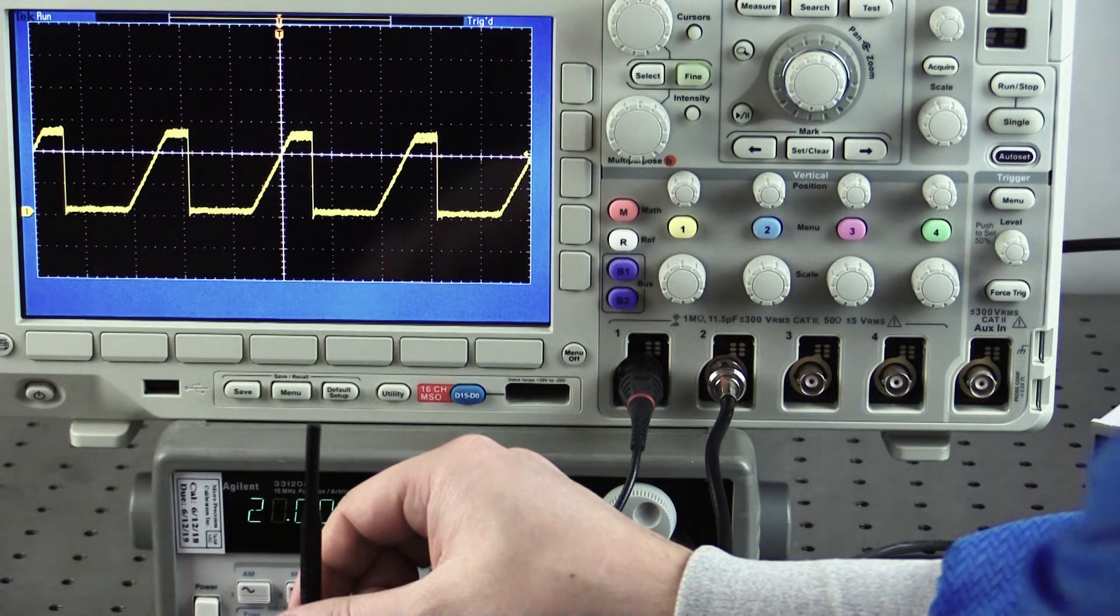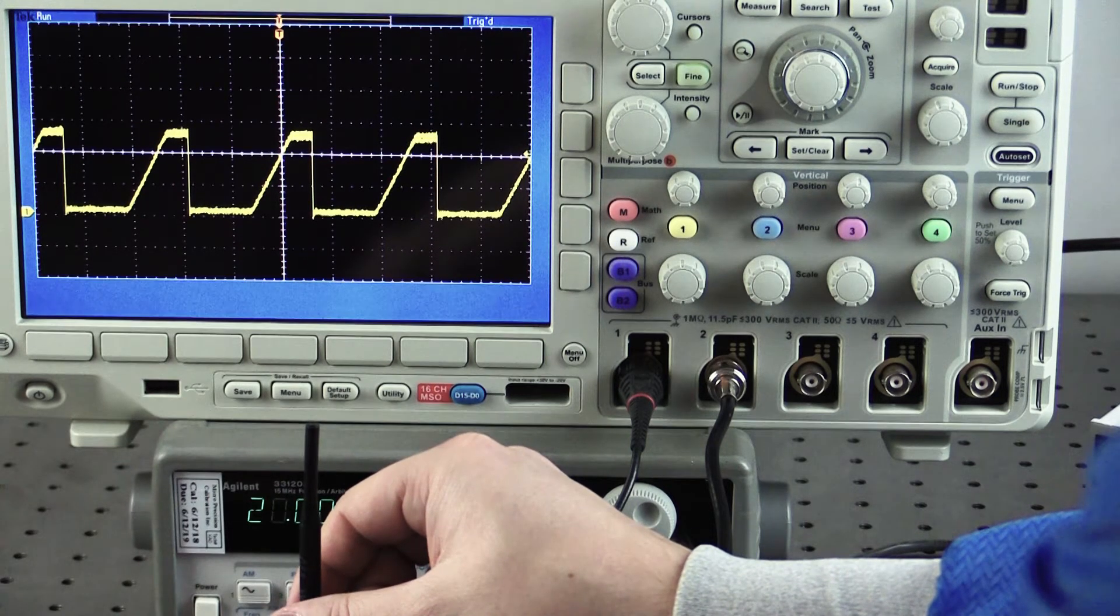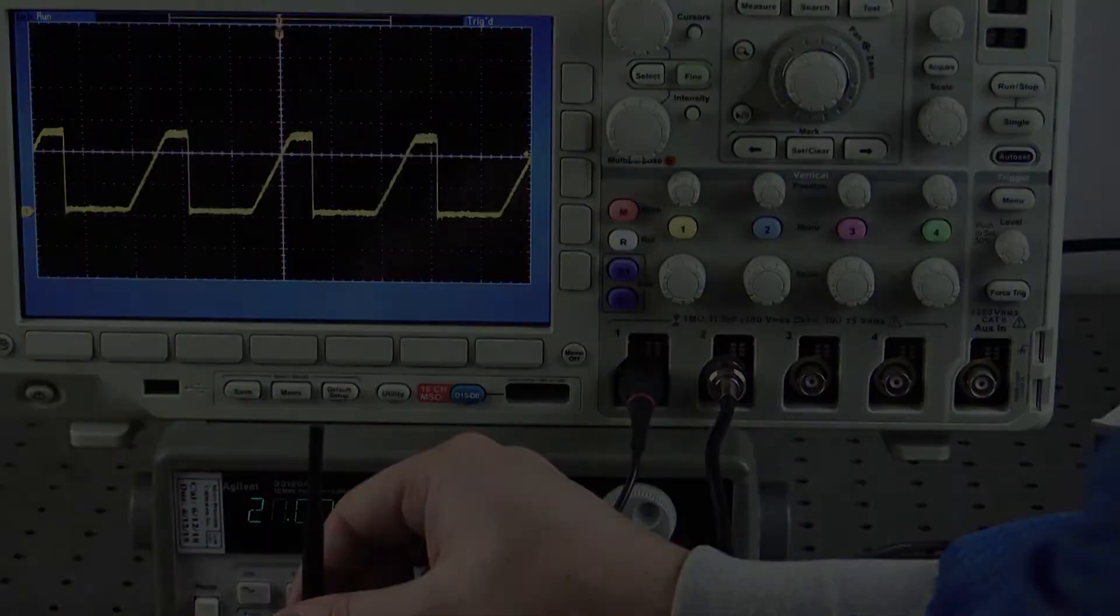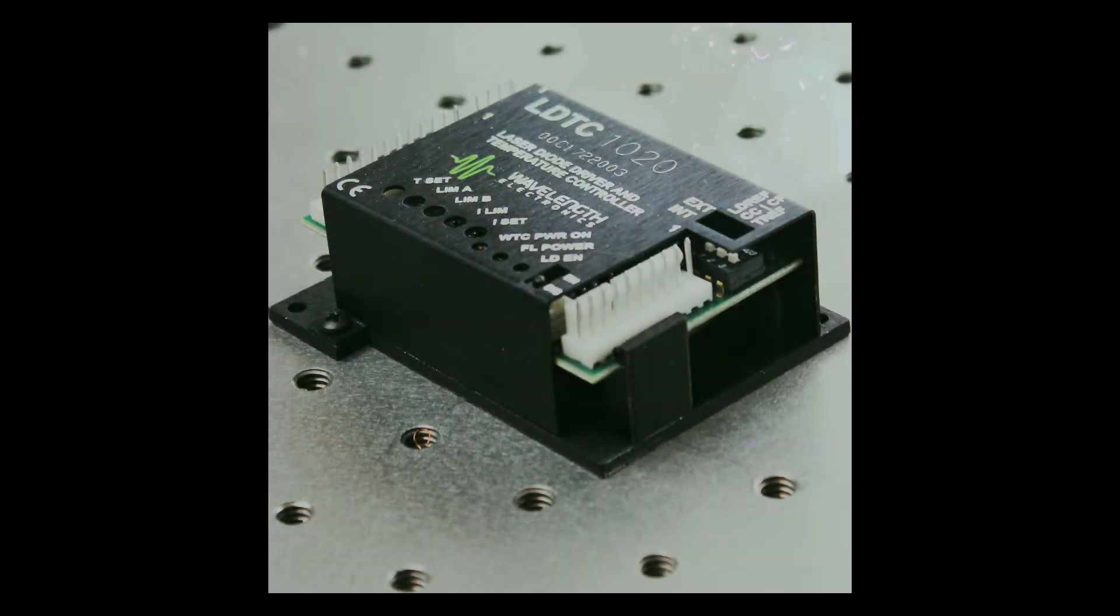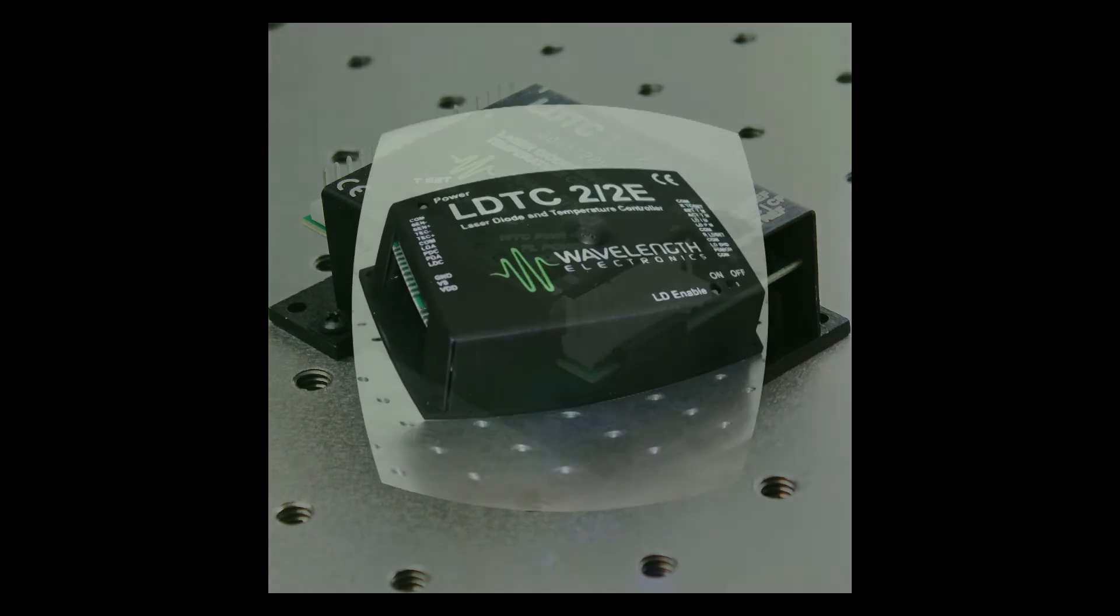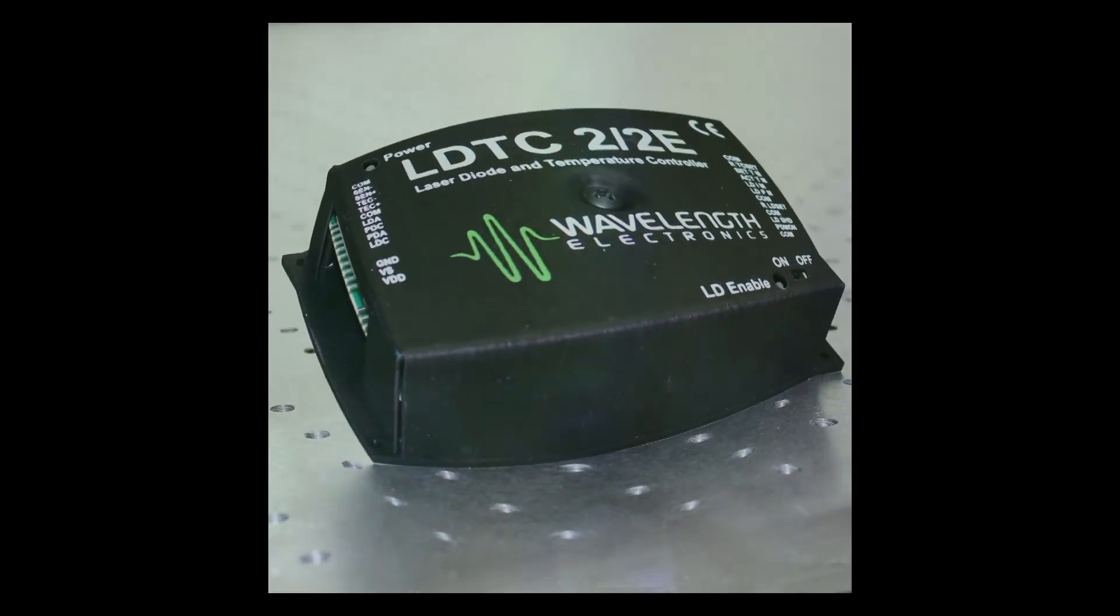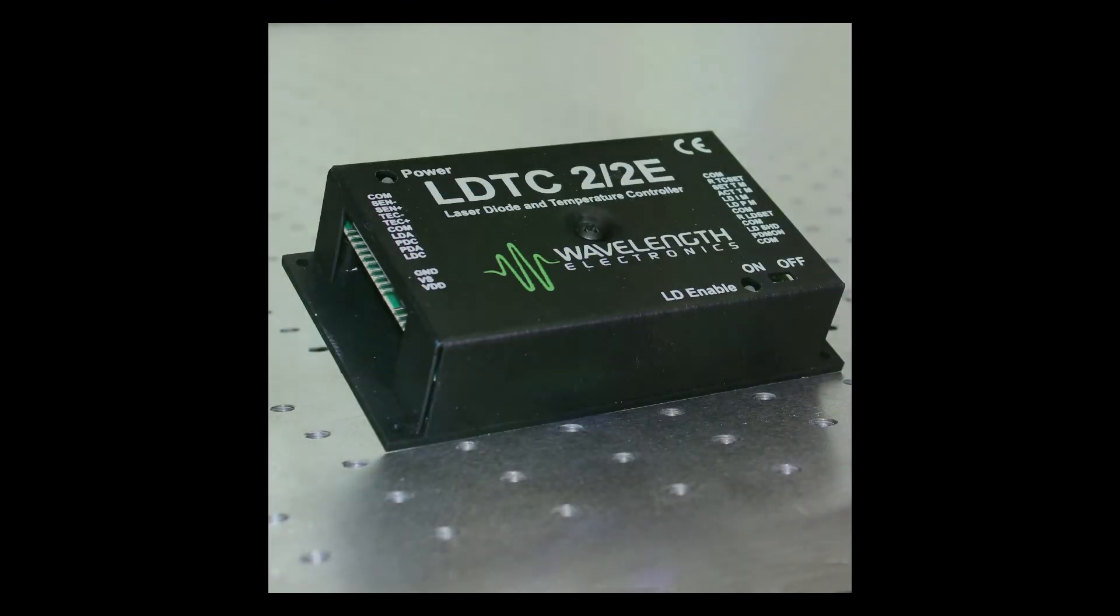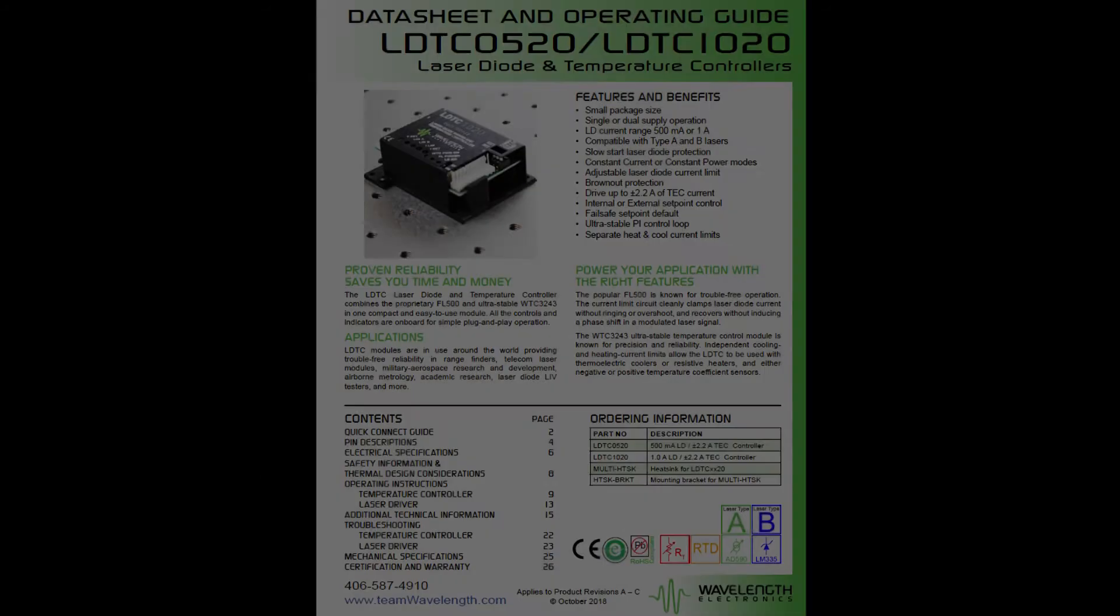That's it! Now you're ready to hook up your laser diode for a complete system with integrated temperature control. If you need more laser diode drive current, the LDTC22 is available with up to 2 amps of output. There's more useful information in the datasheet and on our website.